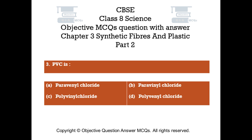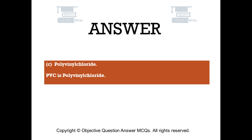Question number 3. PVC is: Option A - paravenyl chloride, Option B - paravenyl chloride, Option C - polyvinyl chloride, Option D - polyvenyl chloride. The right answer is Option C, polyvinyl chloride. PVC is polyvinyl chloride.